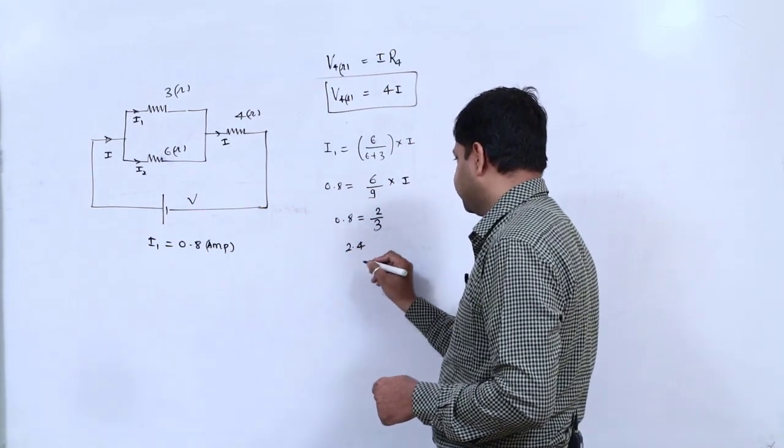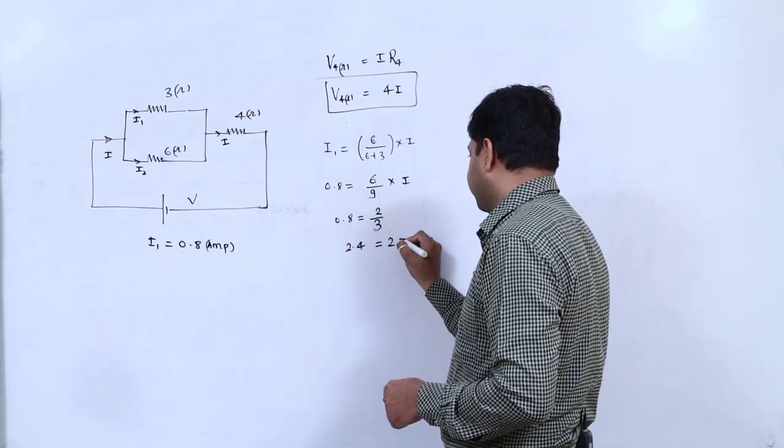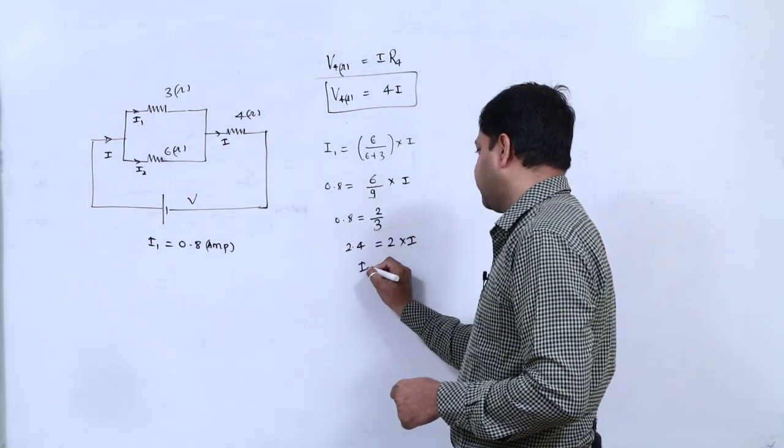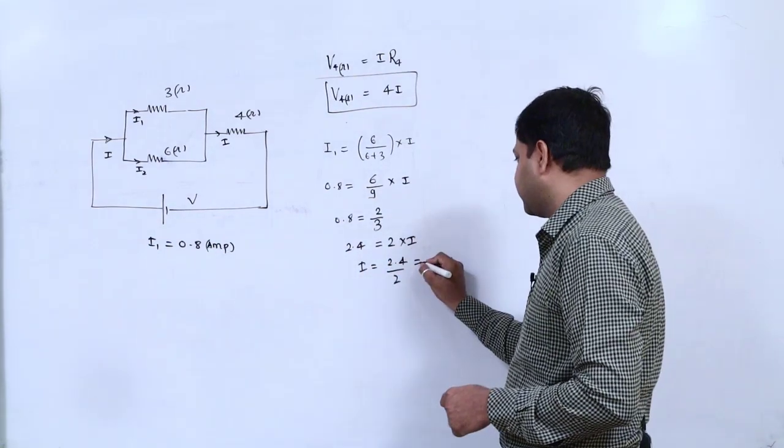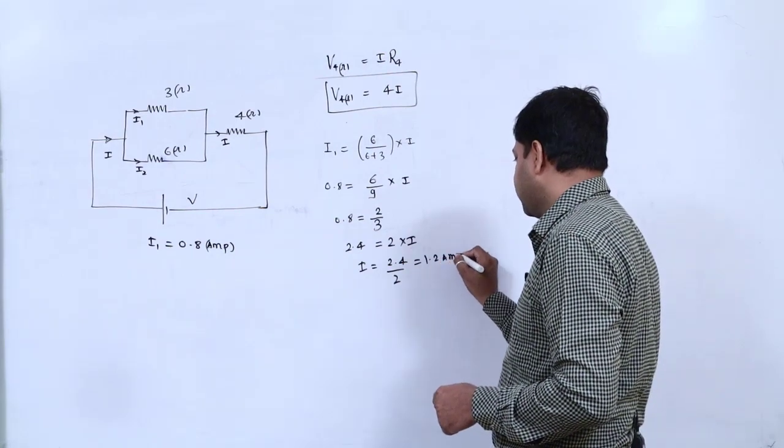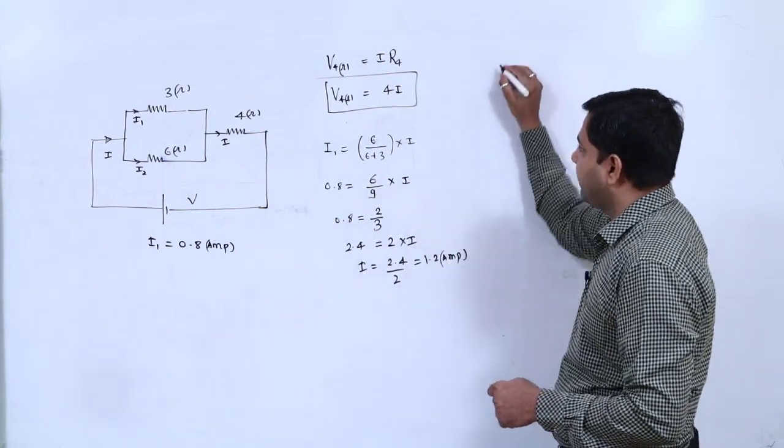2.4 equals 2 multiply by i, so i equals 2.4 divided by 2. 2.4 divided by 2 is how much? It comes to 1.2 ampere. And you put 1.2 ampere here.